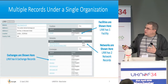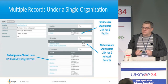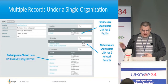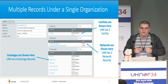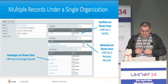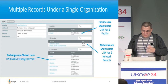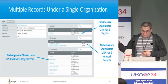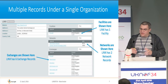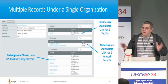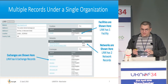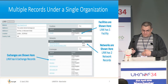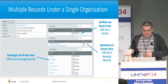Here are examples illustrating all the new user features and how to associate your data correctly. We're in Manchester, so I chose IX Manchester as an example, which happens to be under Links. You can see there is one organization — Links — they have a data center facility, two networks, and six internet exchanges. These are all associated under the same organization, making it very easy to see what they own just by looking at their organization record.